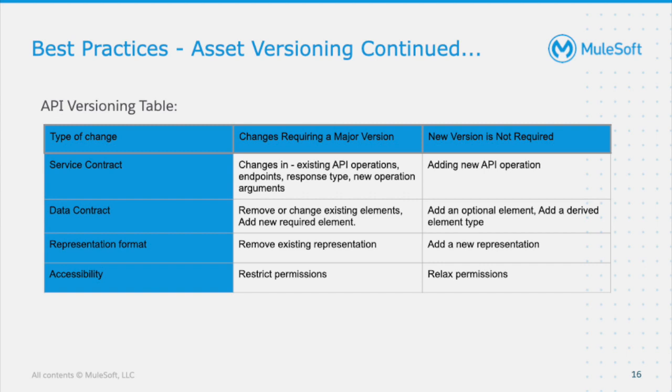Now let's talk about when a major version change is required. The different types of changes include service contract change, data contract change, representation format change, and accessibility change. Changes requiring a major version bump include: adding new operation arguments that are mandatory, changing existing endpoints or operations, and any type of response changes. If customers are already using an API asset and you make changes to the existing working API that directly impact them — requiring changes on their end — that is a major change. Adding new API operations at this point does not require a version change.